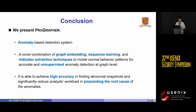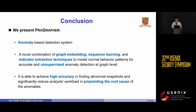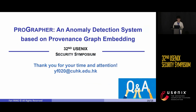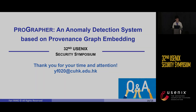In summary, we propose ProGrapher, an anomaly-based detection system that leverages a unique combination of graph embedding, sequence learning, and indicator extraction techniques for accurate and unsupervised detection at the graph level. With ProGrapher, we have demonstrated its ability to attain high accuracy in identifying abnormal snapshots, while significantly reducing the workload of analysts in pinpointing the root cause of anomalies. Thank you all for your attention. This concludes my talk. Please feel free to reach out to me if you have any questions.